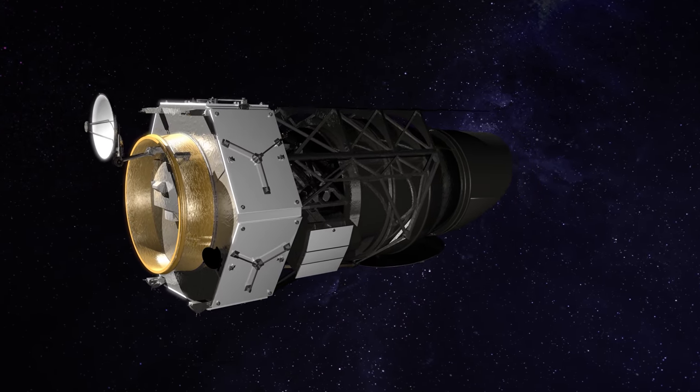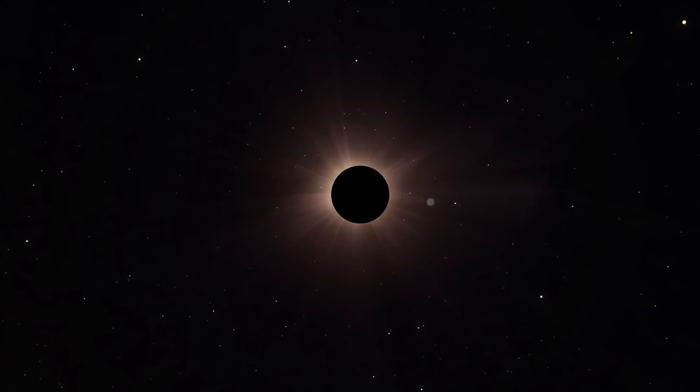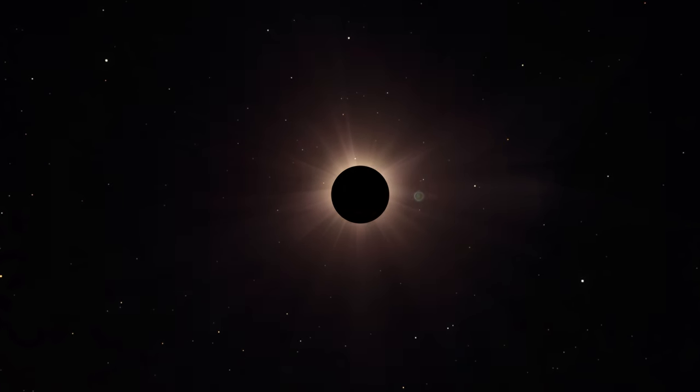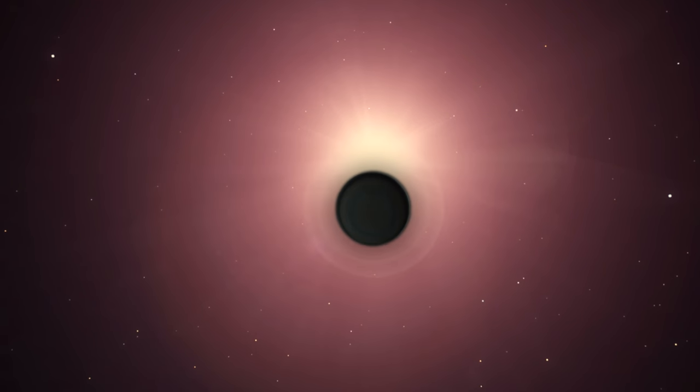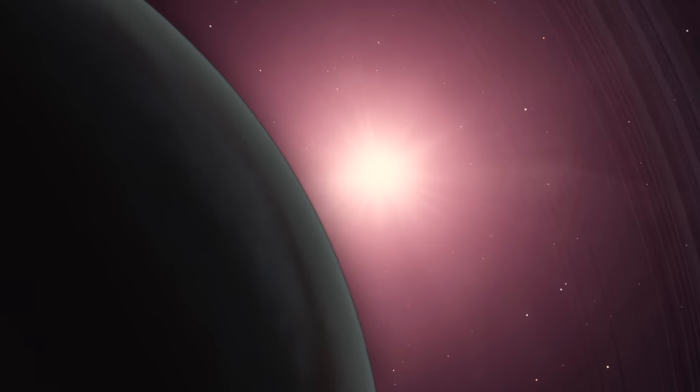By deploying a starshade, future space telescopes could simulate an eclipse of a parent star, blocking enough starlight to determine an exoplanet's overall color and perhaps taking direct photos of its surface and atmosphere.